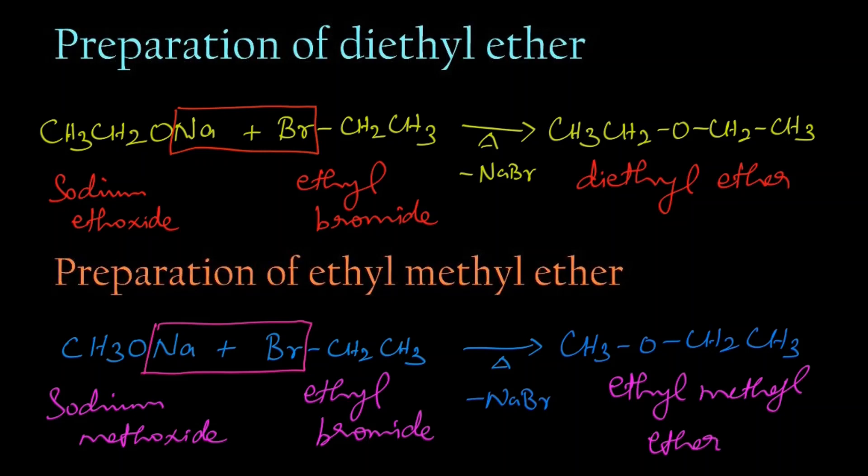So if we want to prepare diethyl ether, we need to take sodium ethoxide and ethyl bromide. And if we want to prepare ethyl methyl ether, we need to take sodium methoxide and ethyl bromide to get the product ethers. Thank you.